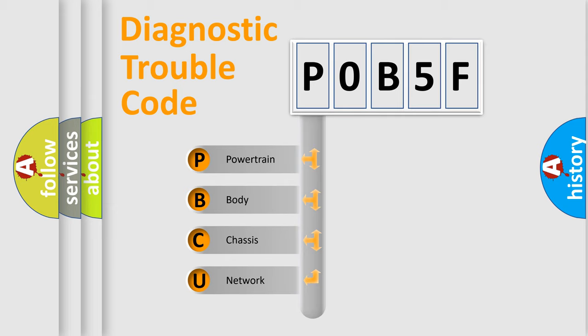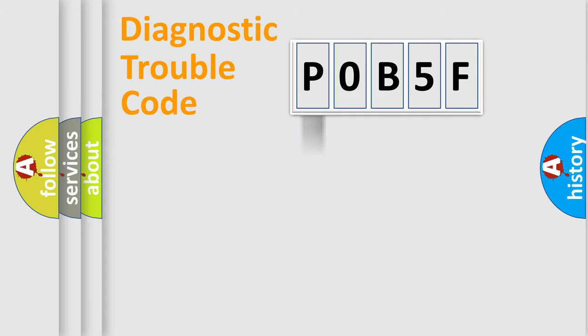We divide the electric system of automobile into the four basic units: Powertrain, Body, Chassis, and Network. This distribution is defined in the first character code.